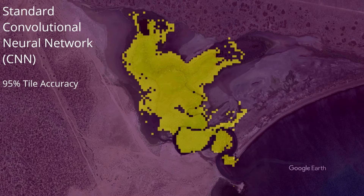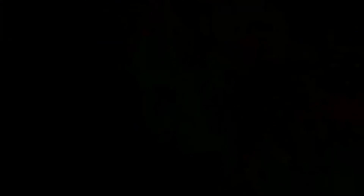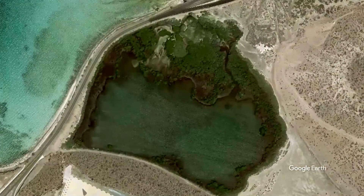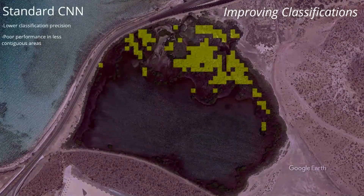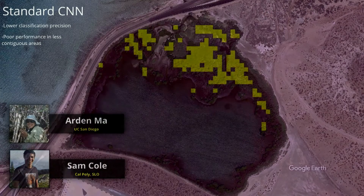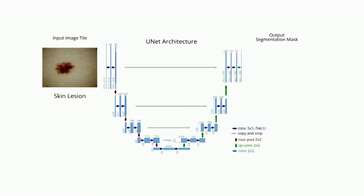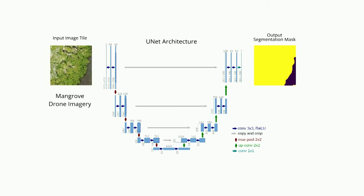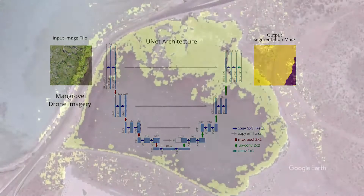However, such a network takes in and classifies tiles or square sections of imagery rather than individual pixels, which greatly limits the precision of our classifications. The obvious first direction was to move away from classifying sections of images to classifying the individual pixels of the image. Thus, Arden Ma and myself, Sam Cole, used a U-Net, which originally was designed for biomedical applications, and applied it to classifying mangrove land areas.